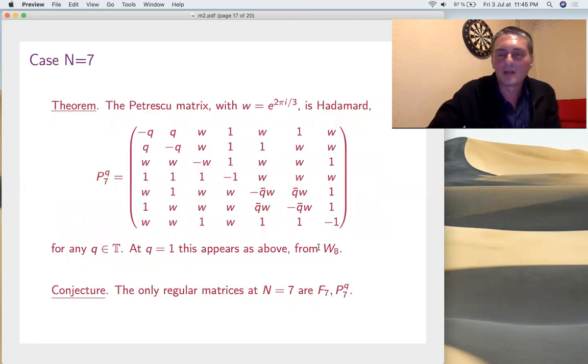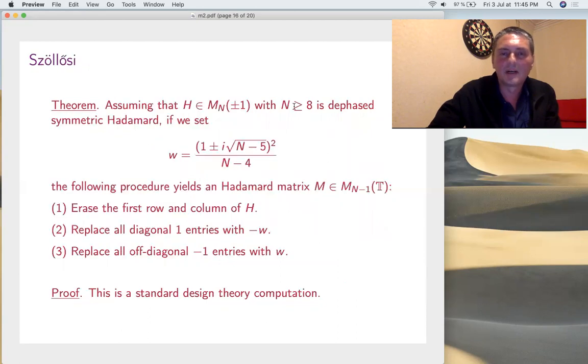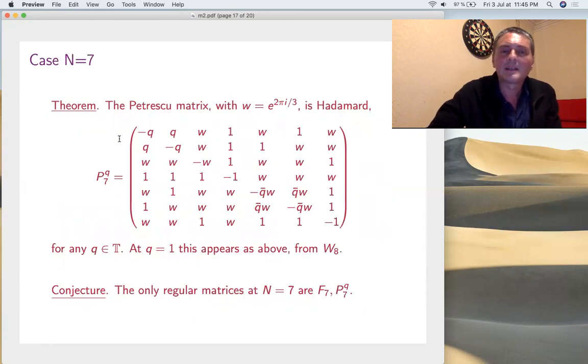So, if you take the Walsh matrix, remember we need n greater than 8 for the sigma to collapse somehow. Dephased symmetric, so Walsh satisfies this. So, we get a seven by seven matrix and that's the one. It's also called Petrescu matrix when Q is 1. Petrescu discovered that you can also put some Qs here and here.